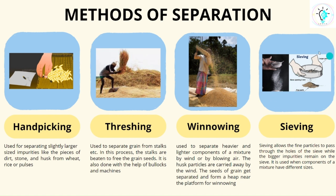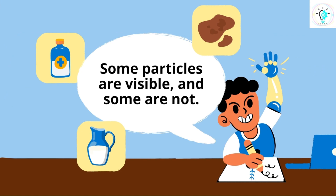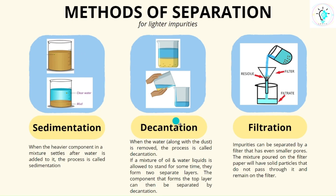The fourth process is sieving, in which we use a sieve. The larger particles stay on top of the sieve and the finer particles pass down through the sieve gaps. However, some of these particles are visible and some are not visible, so how do we separate such components? For lighter impurities we may use the process of sedimentation, decantation, or even filtration.